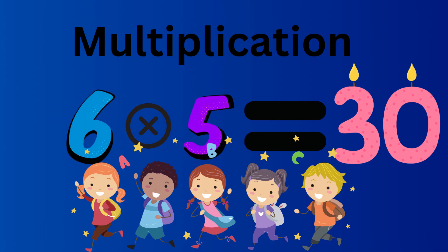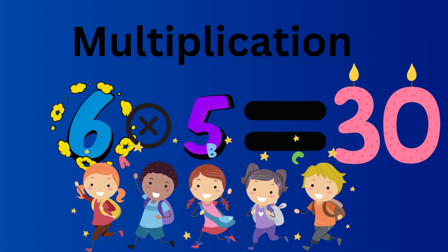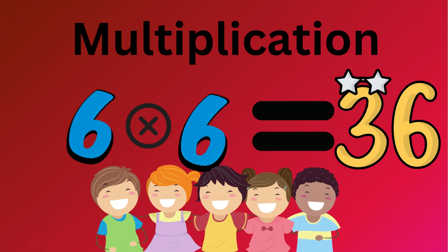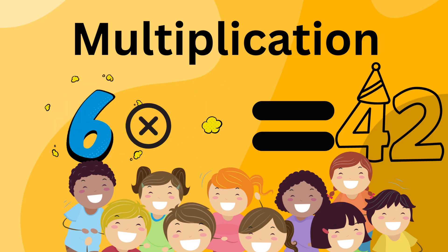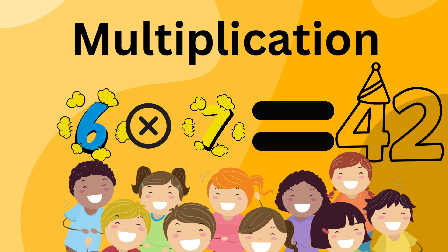6 multiplied by 5 equals to 30. 6 multiplied by 6 equals to 36. 6 multiplied by 7 equals to 42.